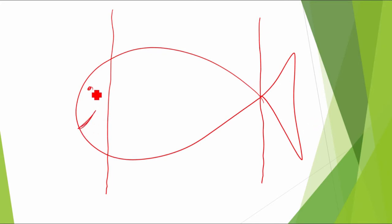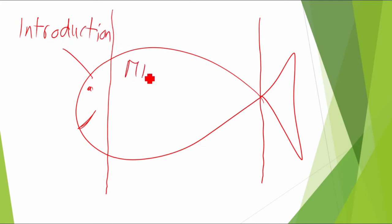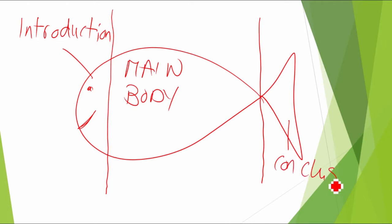Let's make this a happy fish — the head is the introduction, the body is the main body, and the tail is the conclusion. This illustration also shows the balance that an essay should have: the introduction and the conclusion being the shorter or smaller parts, while the main body is, as the word says, the main thing in the text.